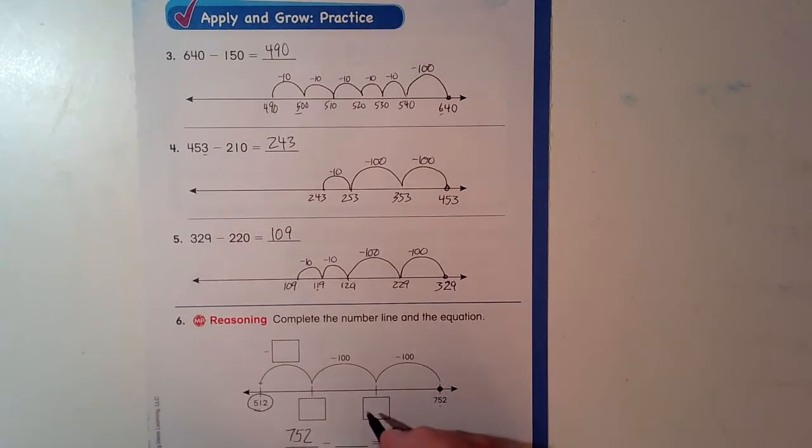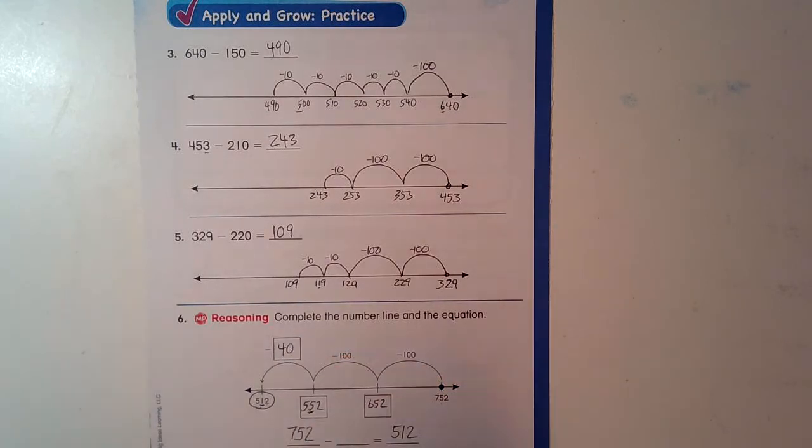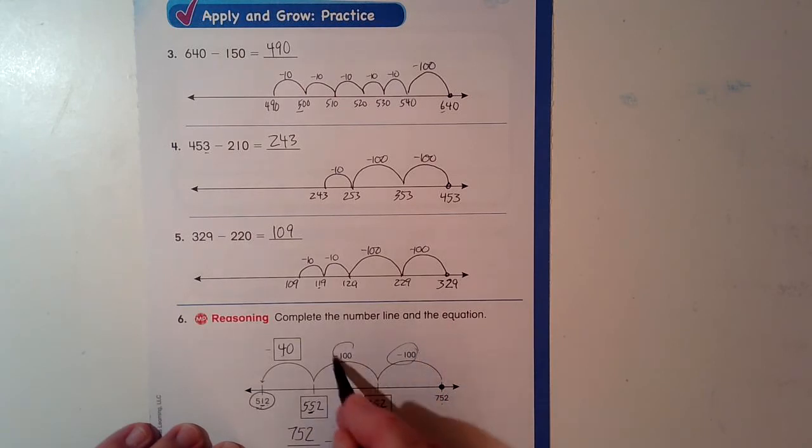752 minus 100 is 652. Minus 100 is 552. And then I'm going to take away some to get to 512. So I have to go from 5 down to 1. How many am I going to take away? I don't need to do it 10, 10, 10, 10. I can do it all at once. 5 minus 4 equals 1. So I took away 100, 200, 40. There's my answer. And your answer too.